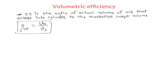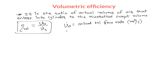This is called volumetric efficiency, where Va is the actual volume flow rate. It is in meter cube per second. As it is a rate, it is in meter cube per second. Vs is the theoretical swept volume flow rate, also in meter cube per second.